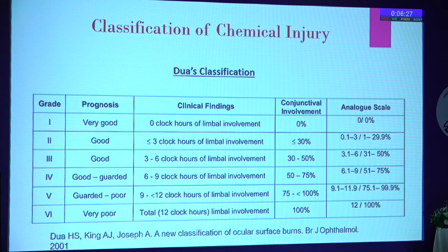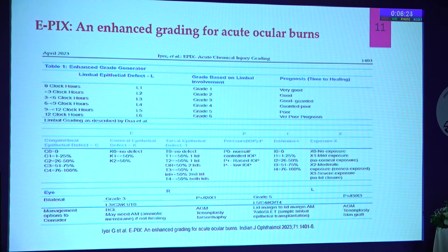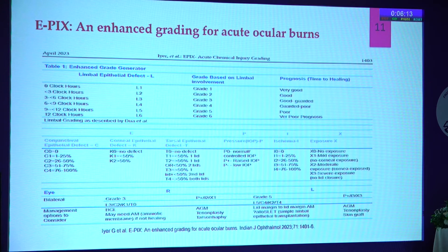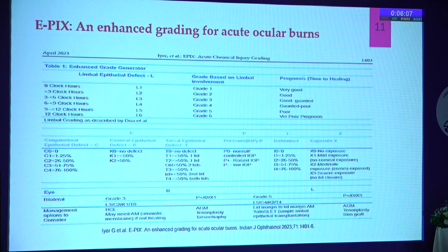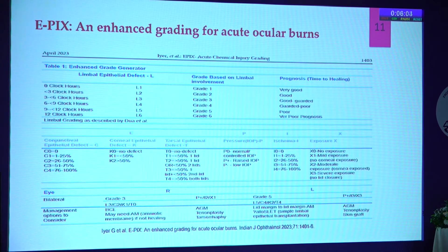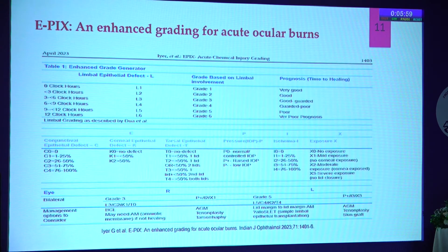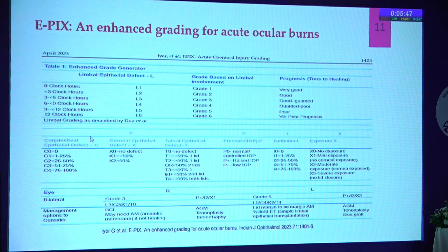There is another classification published in the recent IJO, given by the SN group, known as EPICS classification. E stands for epithelium, P stands for pressure, I stands for ischemia, C for conjunctiva, and X stands for exposure. The belief is that it is not just the limbus, cornea, or conjunctiva — there are many other factors in action, so a combined classification system is needed. The grading is exactly like Dhuayatal's classification, as taken directly from that publication.